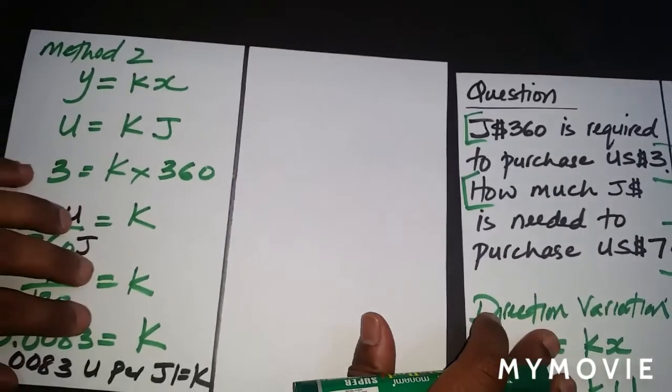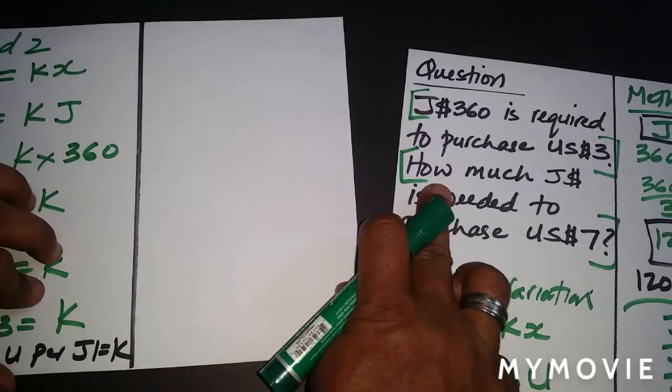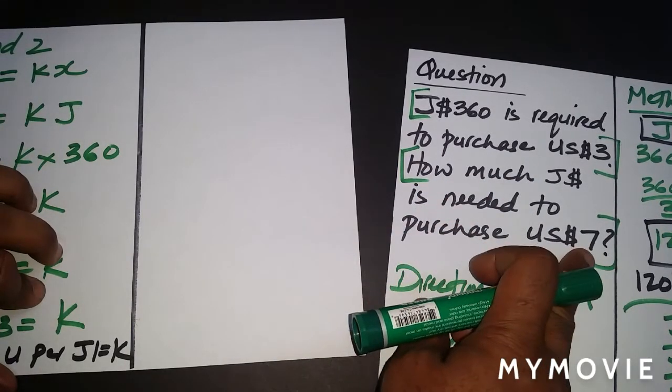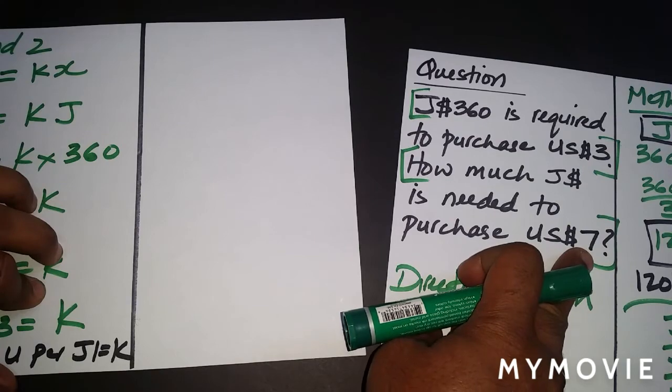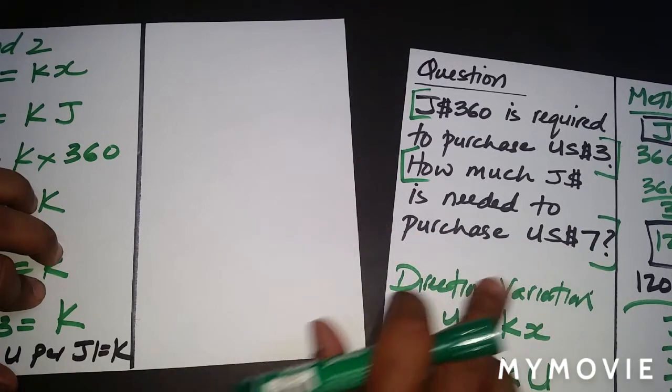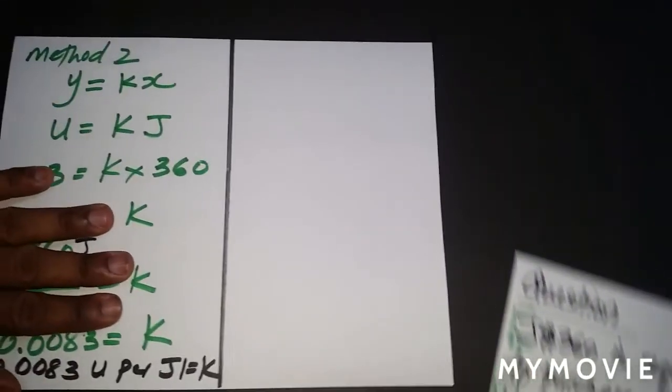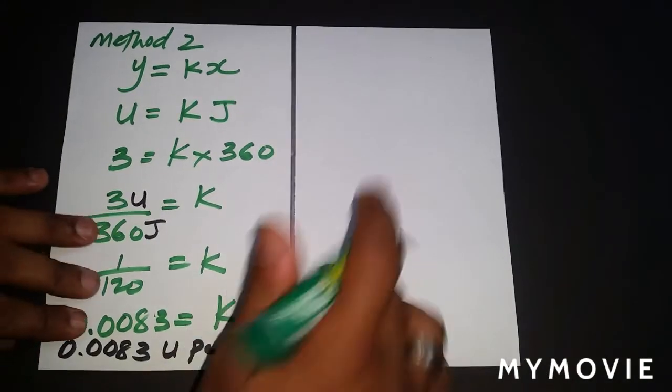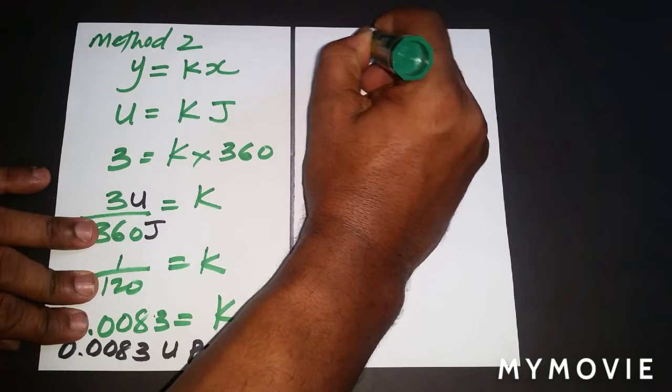In the second part of the statement, it says how much Jamaican is needed to purchase US $7. So that's the part that we need to answer. We have the U.S., we need to find the Jamaica, so we just continue working out here. We're going back to this formula that we used in this method.